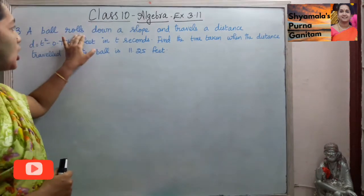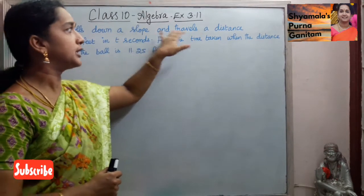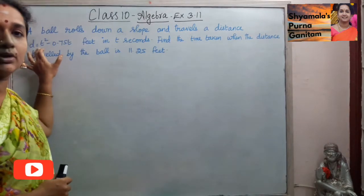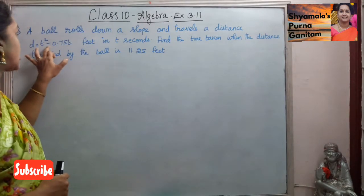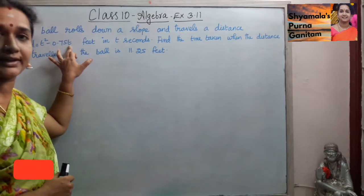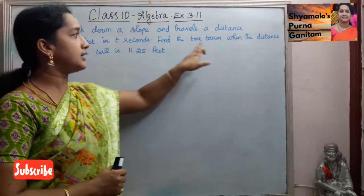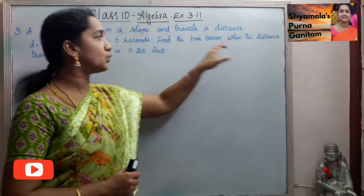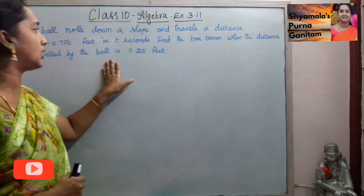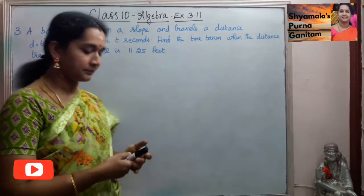Third sum: a ball rolls down a slope and travels a distance d equal to t squared minus 0.75t feet in t seconds. Find the time taken when the distance travelled by the ball is 11.25 feet.